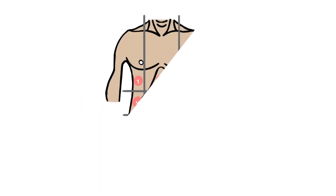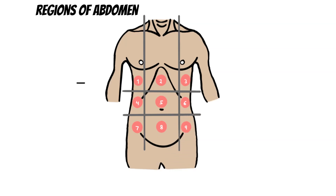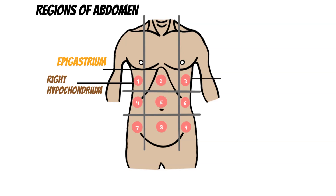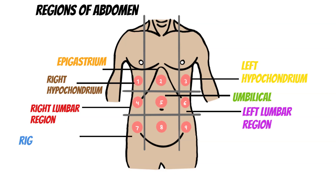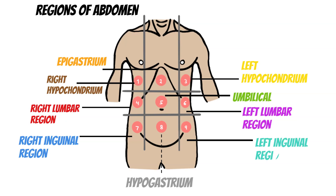Before we get into how to actually assess for abdominal pain, we need to know a little bit about the anatomy — specifically the regions of the abdomen. This is an example of how you can split up the regions into nine separate regions. I've allocated numbers to each region: the right hypochondrium, the epigastrium, the left hypochondrium, the right lumbar region, the umbilical region, the left lumbar region, the right inguinal region, the hypogastrium, and the left inguinal region.